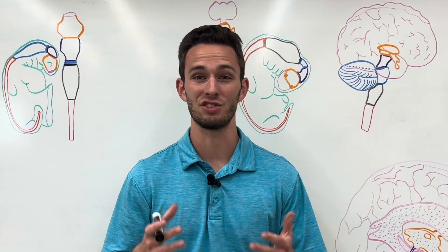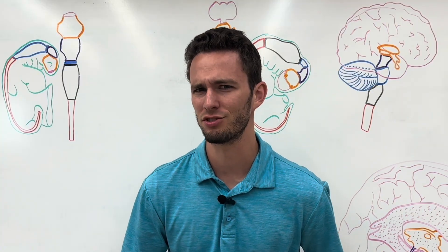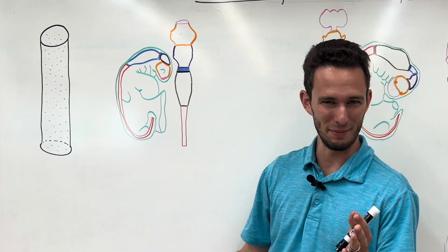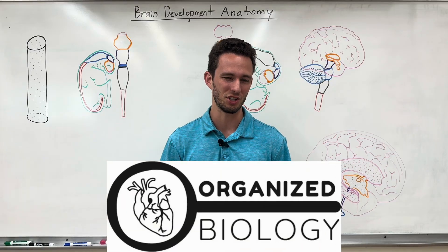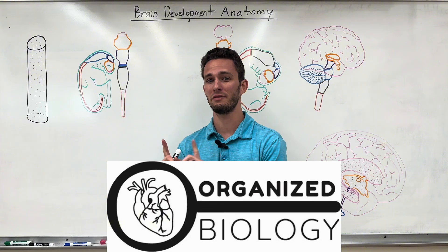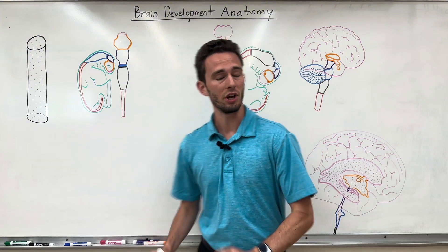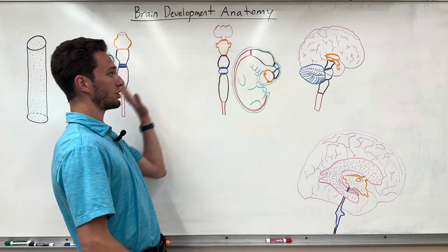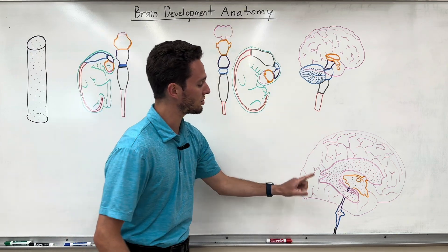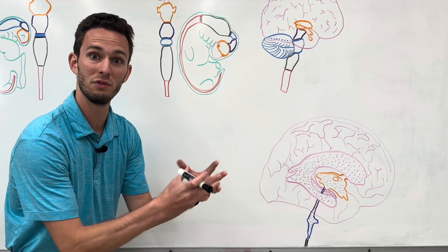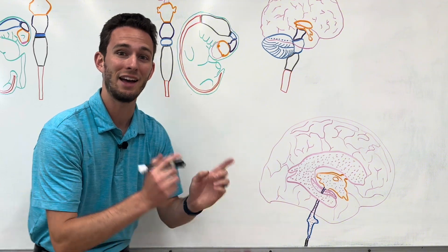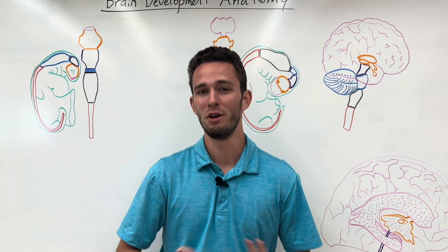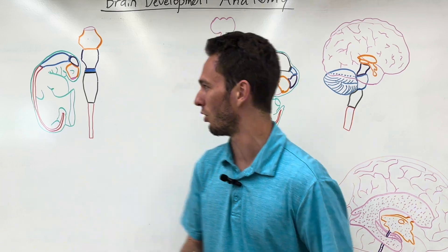When learning about something as complex as the brain, you may be surprised to know that it started as a simple hollow cylinder. Hey everybody, Organized Biology here, and today we're talking about brain development through embryology all the way to adulthood. We'll look at the anatomical structures as they go through development, discuss the ventricles, and cover the functions of the main parts of the brain. This should be your one-stop shop for everything brain.